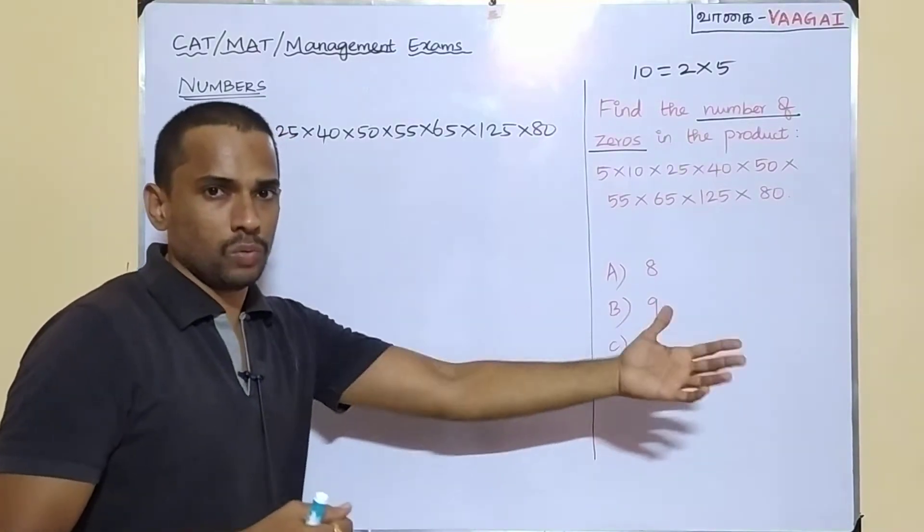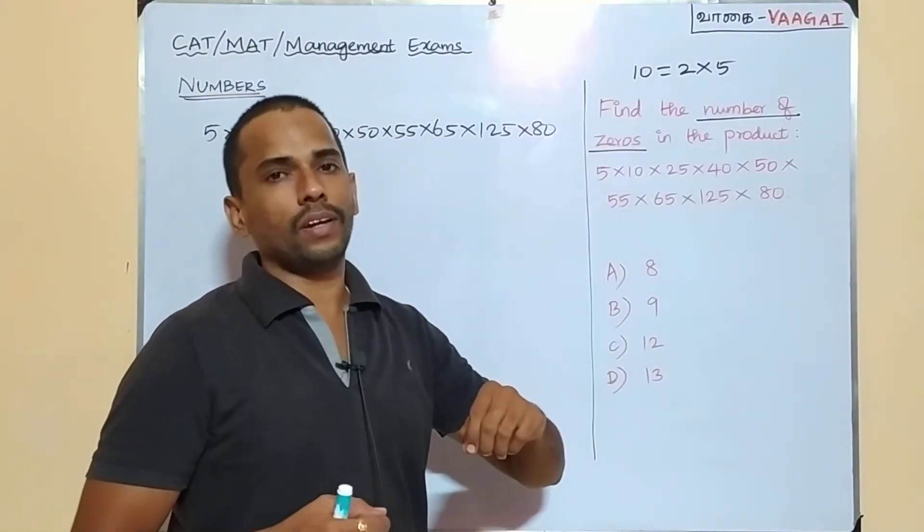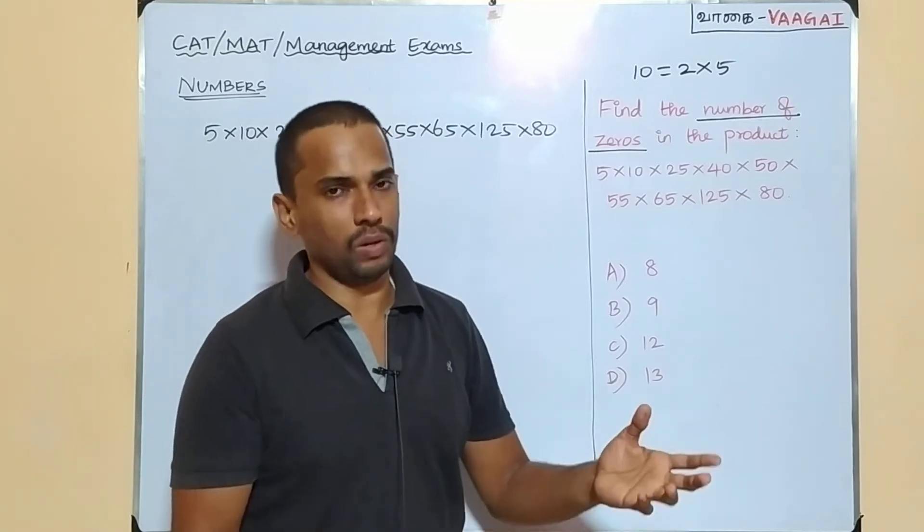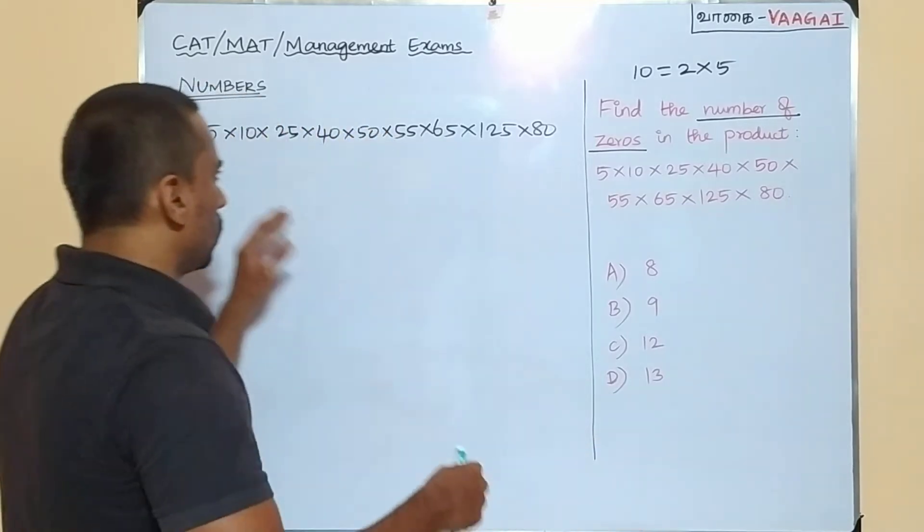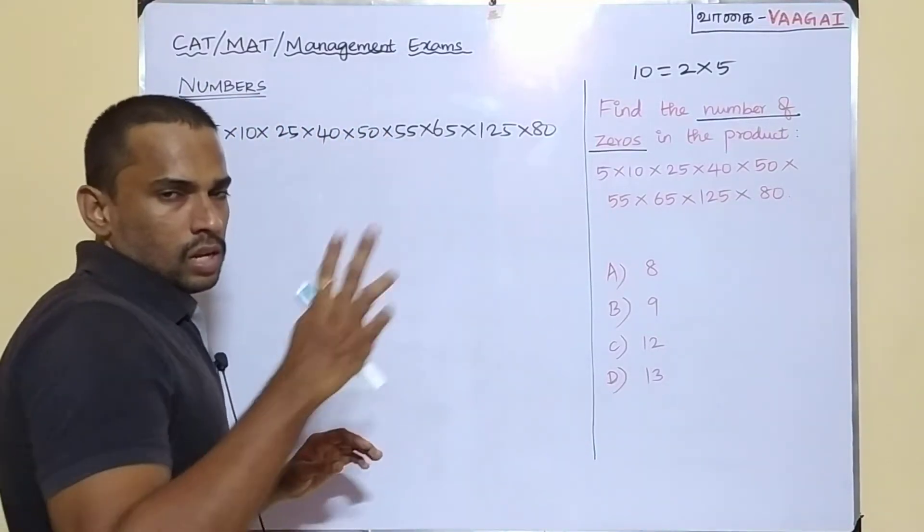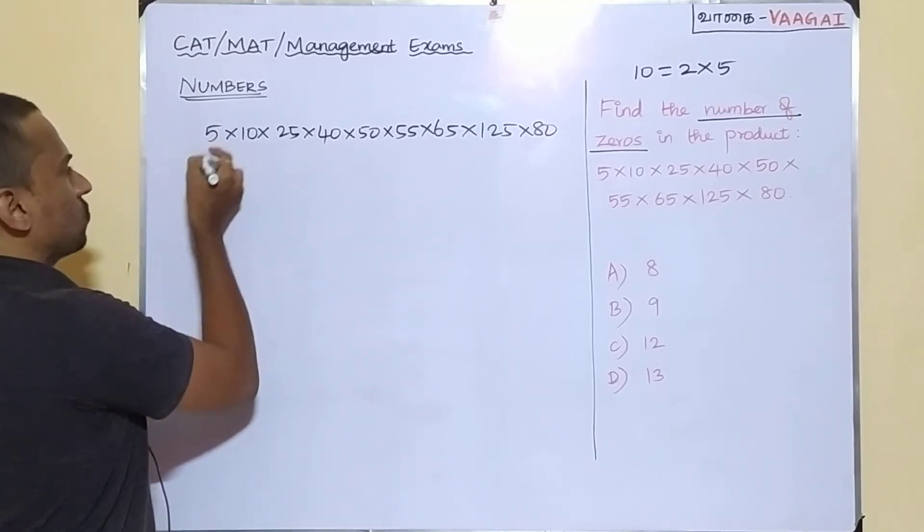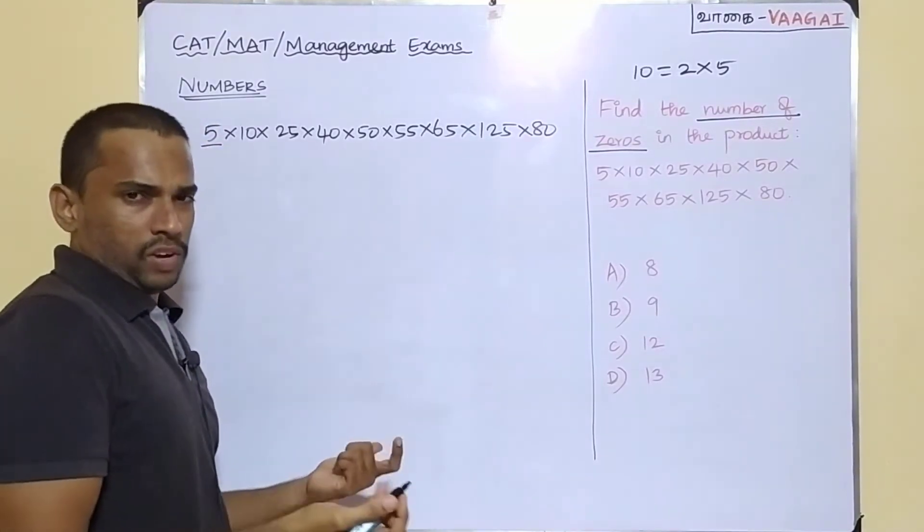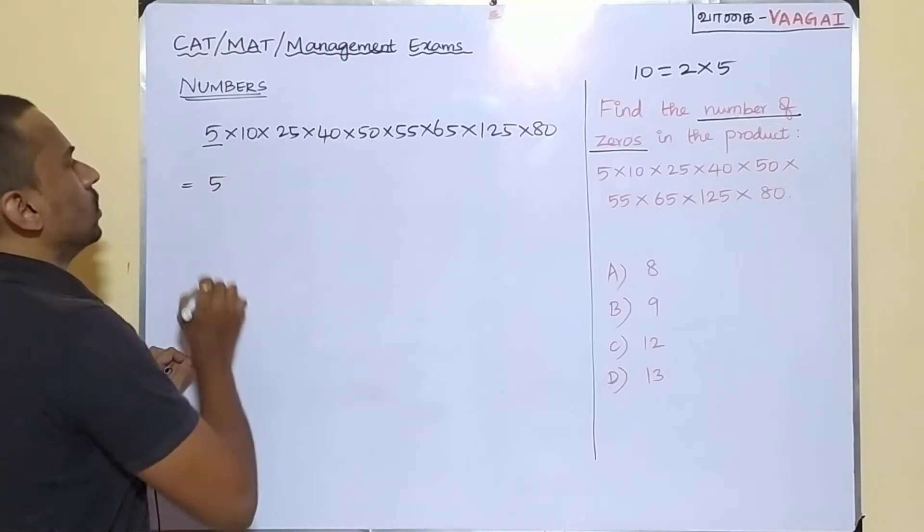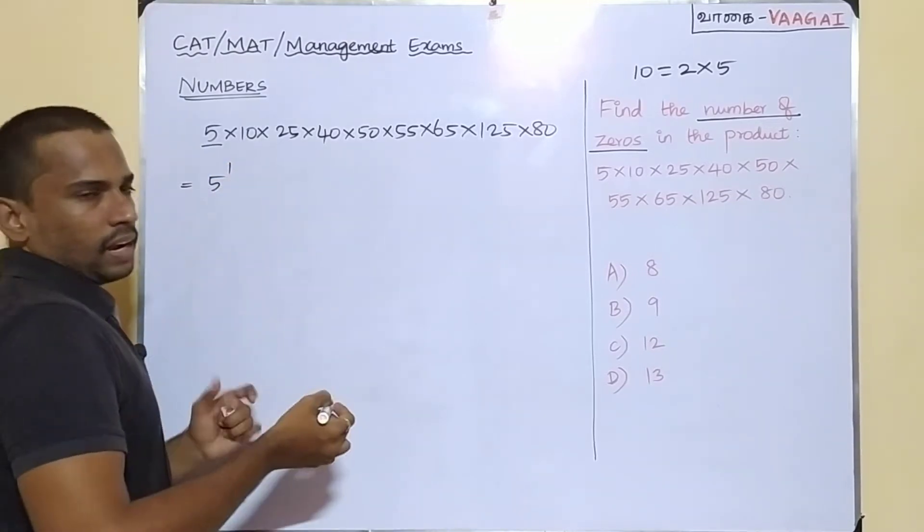Now what we will try to do is, we will try to decompose the number in terms of 2s and 5s. Why 2s and 5s? Because we need to collect as many tens possible. So now break each of these numbers. Start with this 5. This 5 can be simply written as 5 power 1.